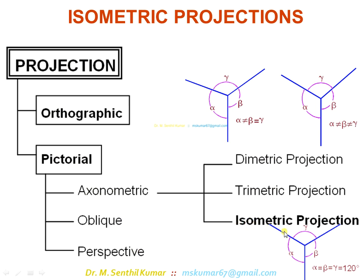In isometric projection, the viewing angle is equal to the three major planes or three major axes. That is, alpha, beta, and gamma are all equal to 120°. The observer is positioned such that all the angles between the three major planes are equal to 120°. That is why it is called isometric projection.